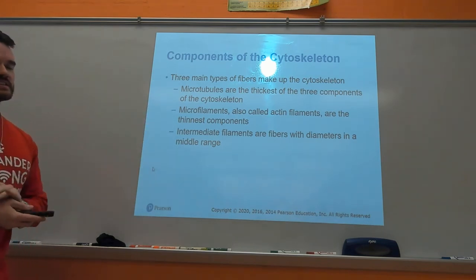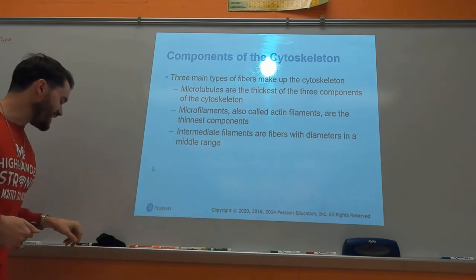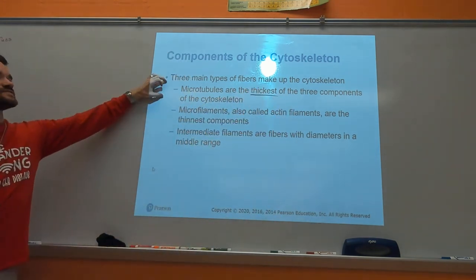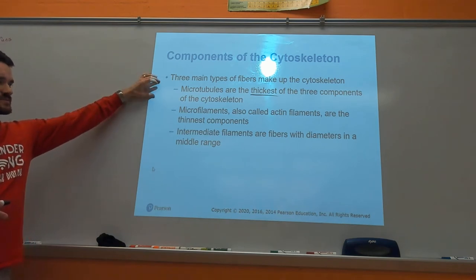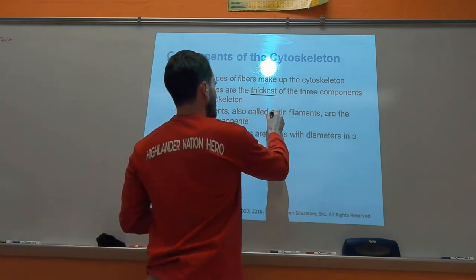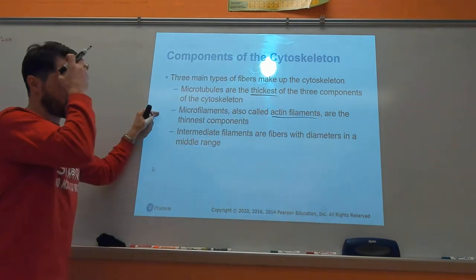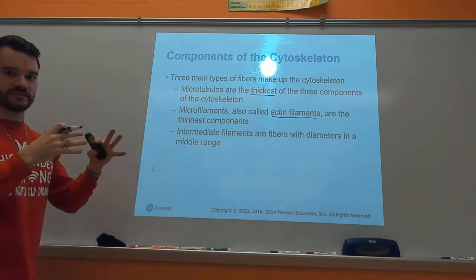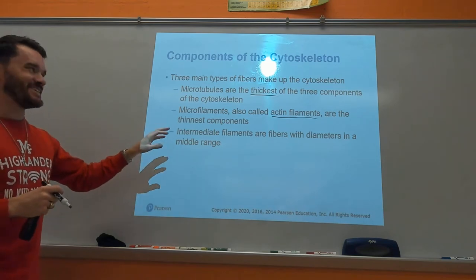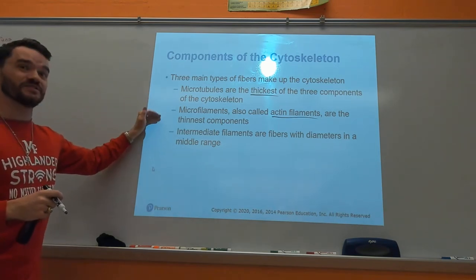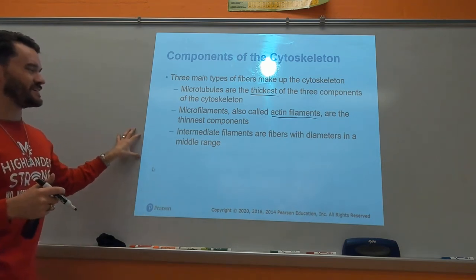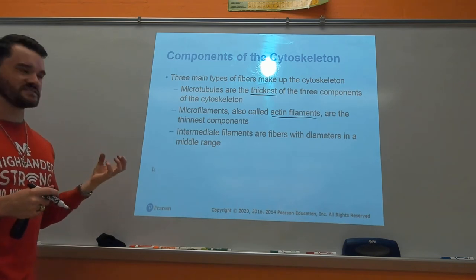There are three different parts of the cytoskeleton. Microtubules are the thickest - the biggest fibers. Microfilaments are the smallest fibers, made of something called actin. Intermediate filaments are in the middle - it's intermediate, so it's the middle range of size. You need to know the relative sizes of these three different cytoskeleton components.